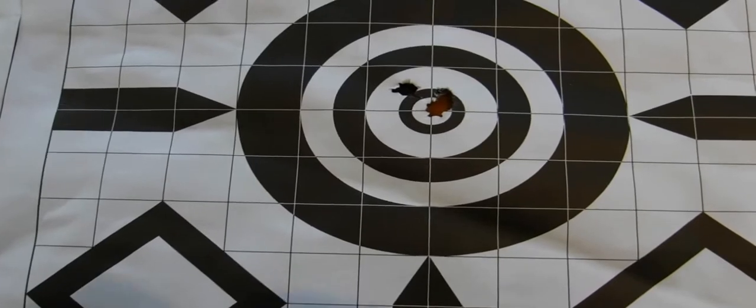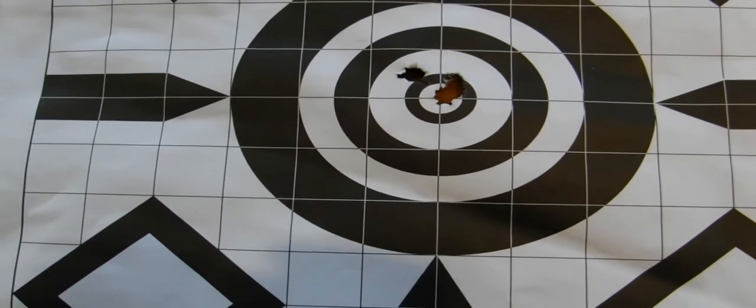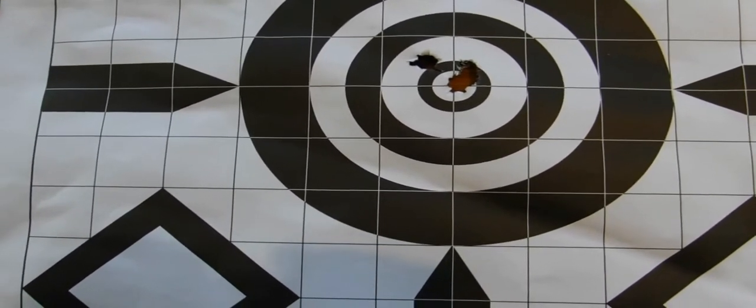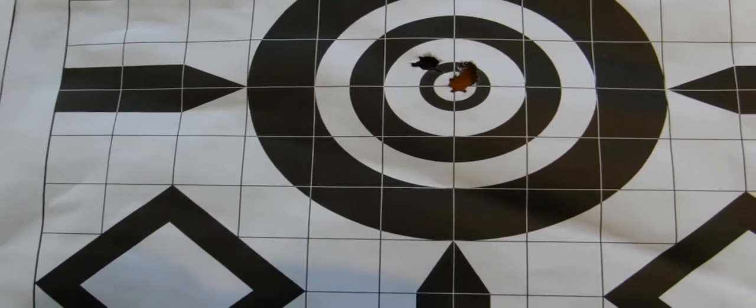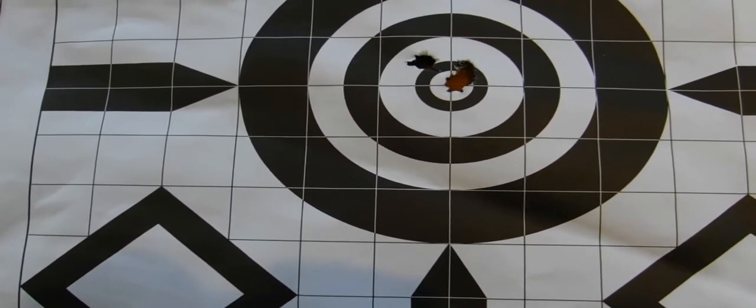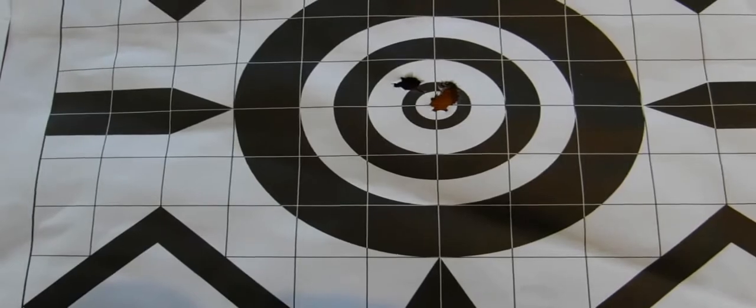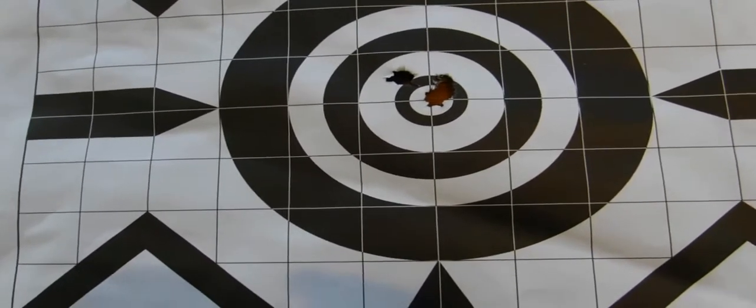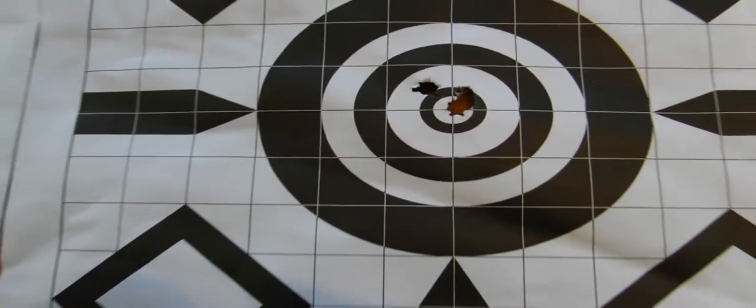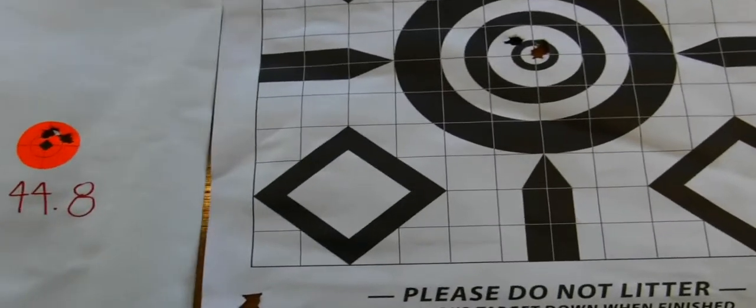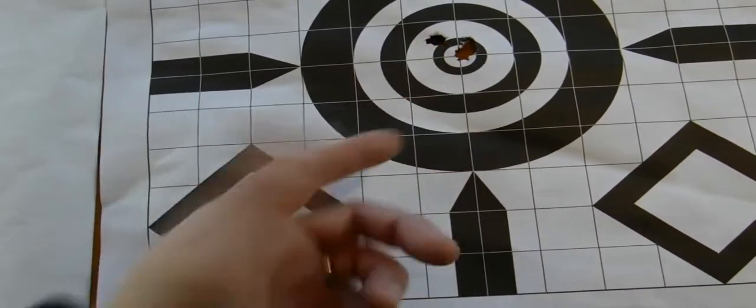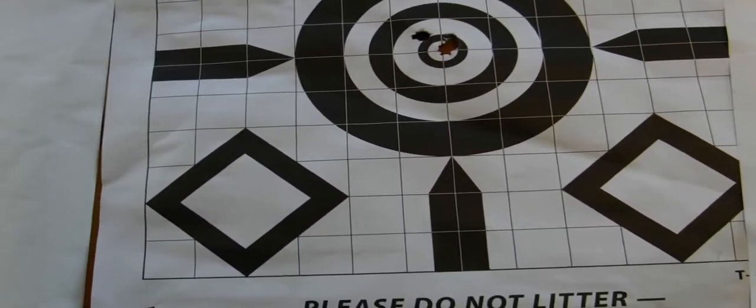You look at here. This is a group, a five-shot group with five different types of powder at 100 meters. What that tells me is you can't tell any difference. It's going into one single hole, except for the flyer here, which I may or may not have pulled.